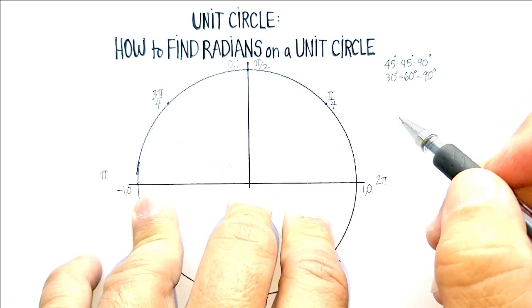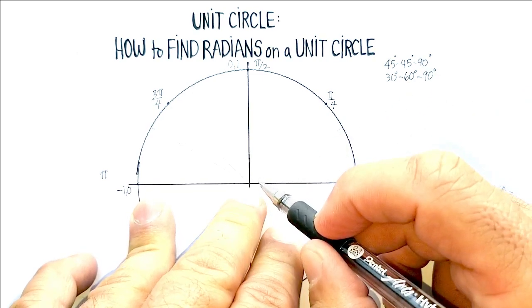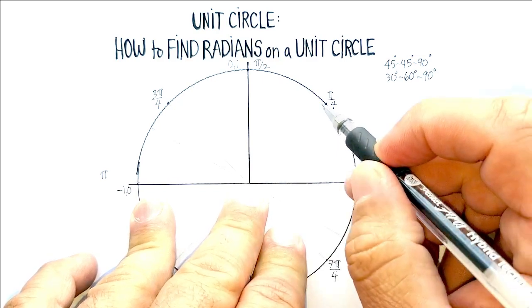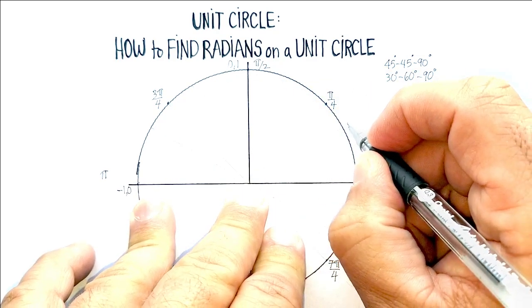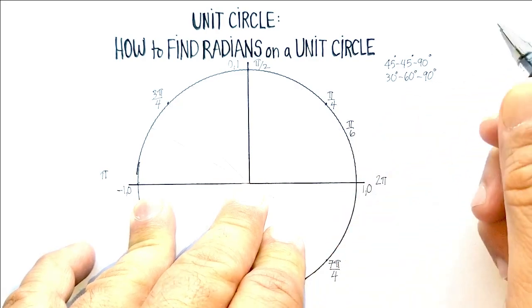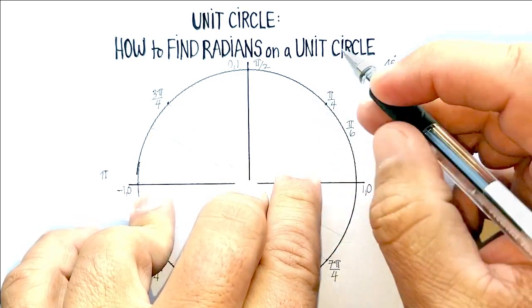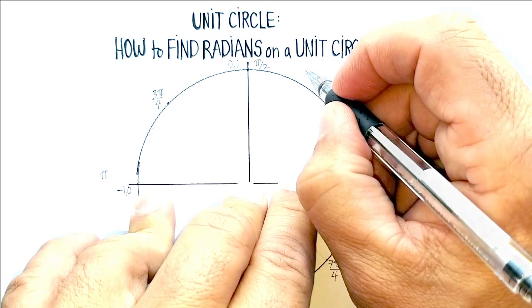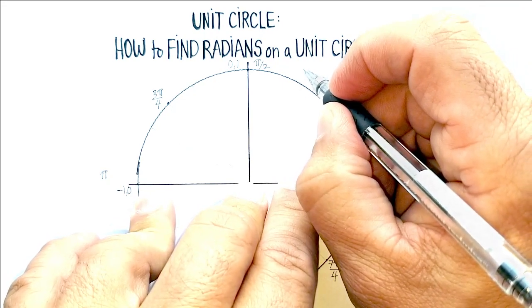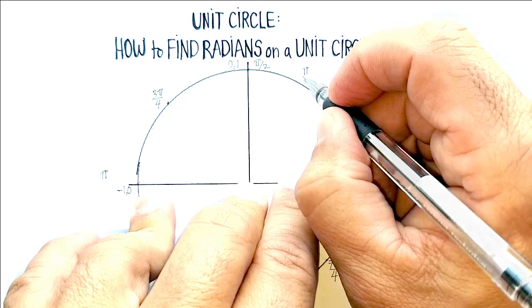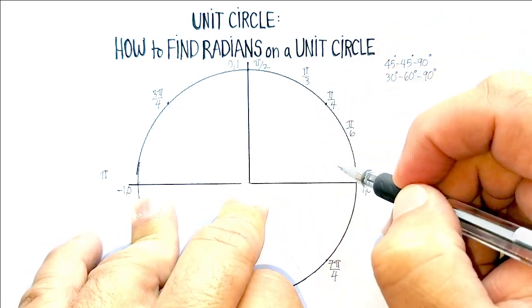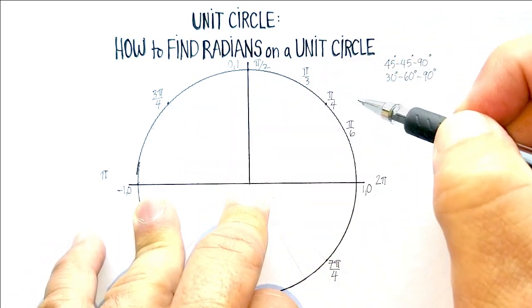So now, again, we want to say what the degrees are in radians. So if we know that this is one-sixth of the whole pi, we're going to say it's pi over six. Here, we've just got another sixth. So that's going to be two over six, or one over three, which then we call it just pi over three, or just a third of a pi. And that's exactly what it would be.